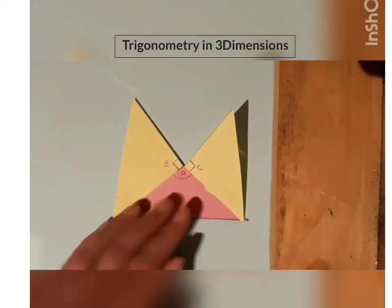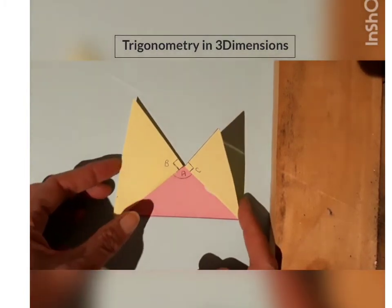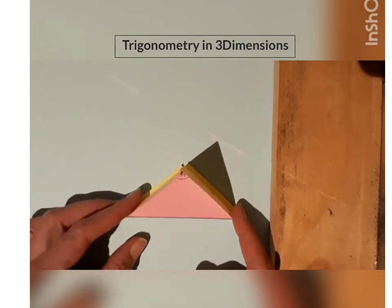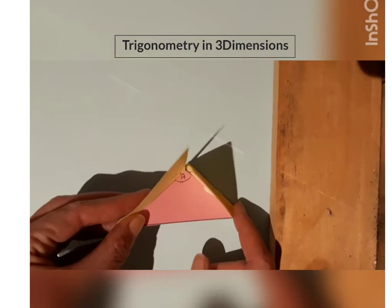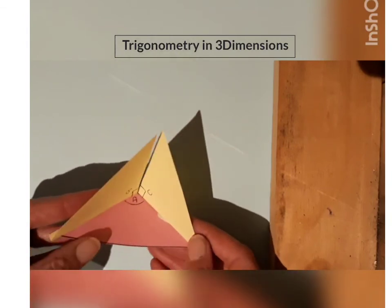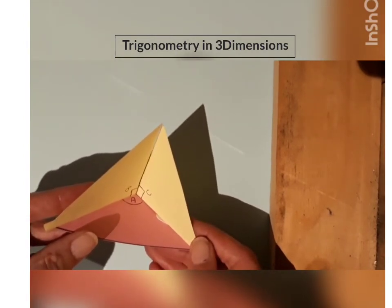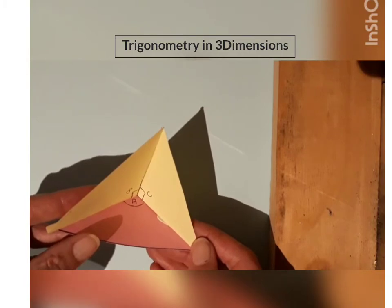To change this into a three-dimensional figure, we can simply lift up the two yellow triangles, so that they are 90 degrees on the pink one. The pink triangle is now our horizontal plane, and the two yellow triangles are our vertical planes.